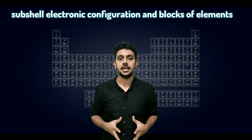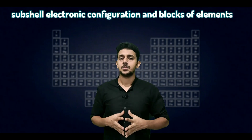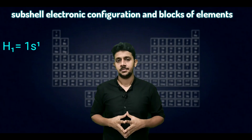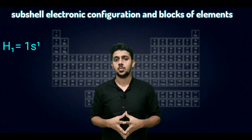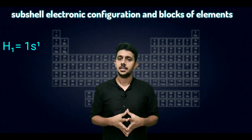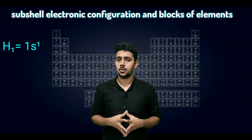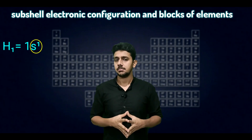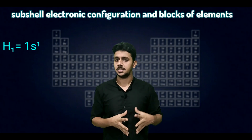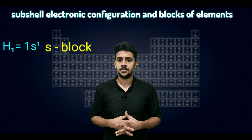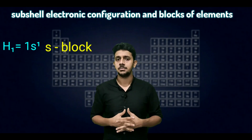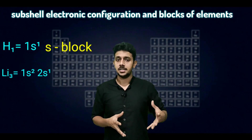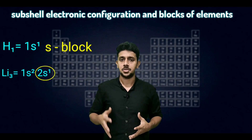Let's look at the configuration of hydrogen. Hydrogen has atomic number one, and its configuration is 1s1. The only one electron is added to the s sub-shell, so hydrogen is considered an s-block element. Look at another example: lithium, atomic number three, configuration is 1s2 2s1. The last one electron is added to the s sub-shell.